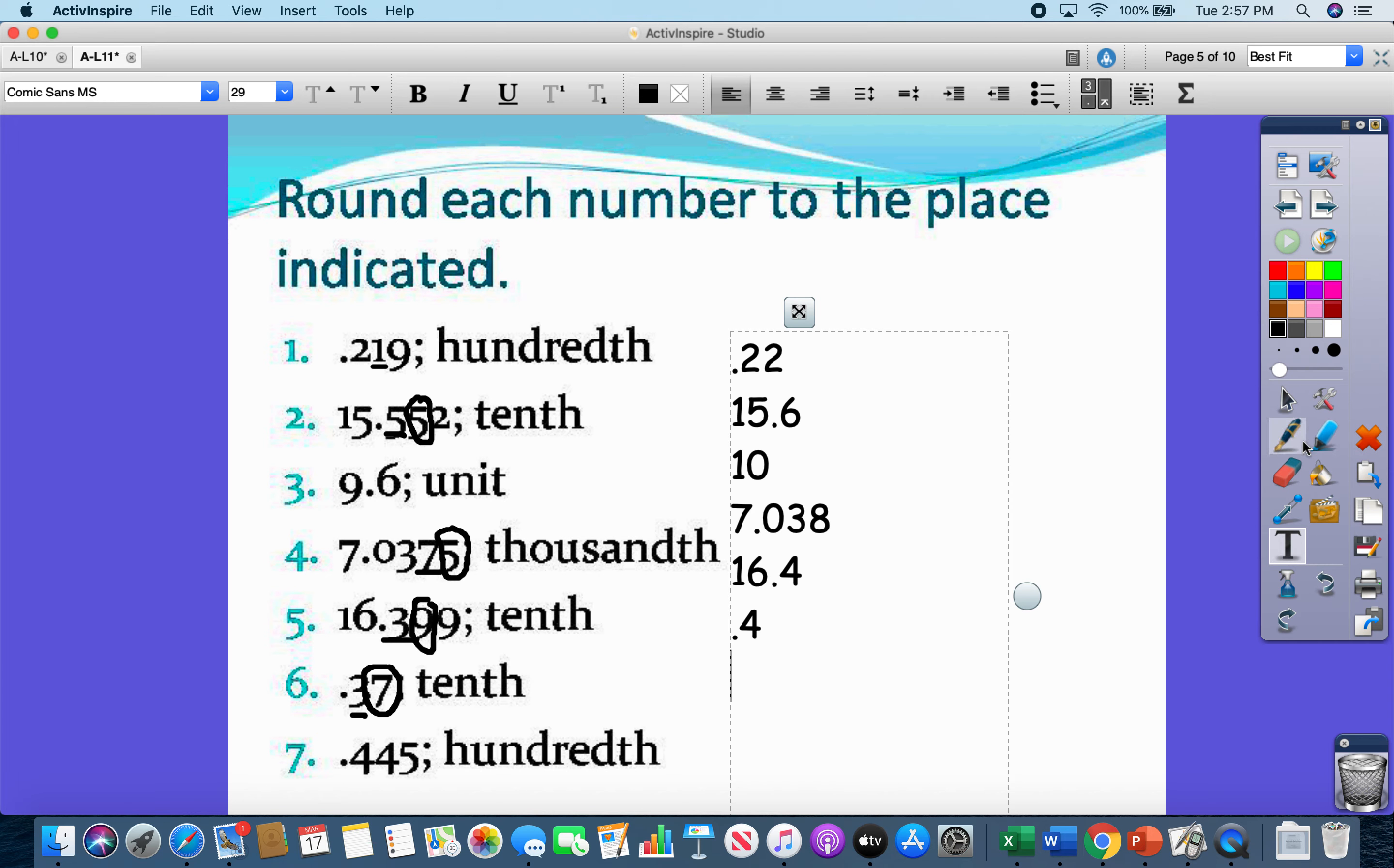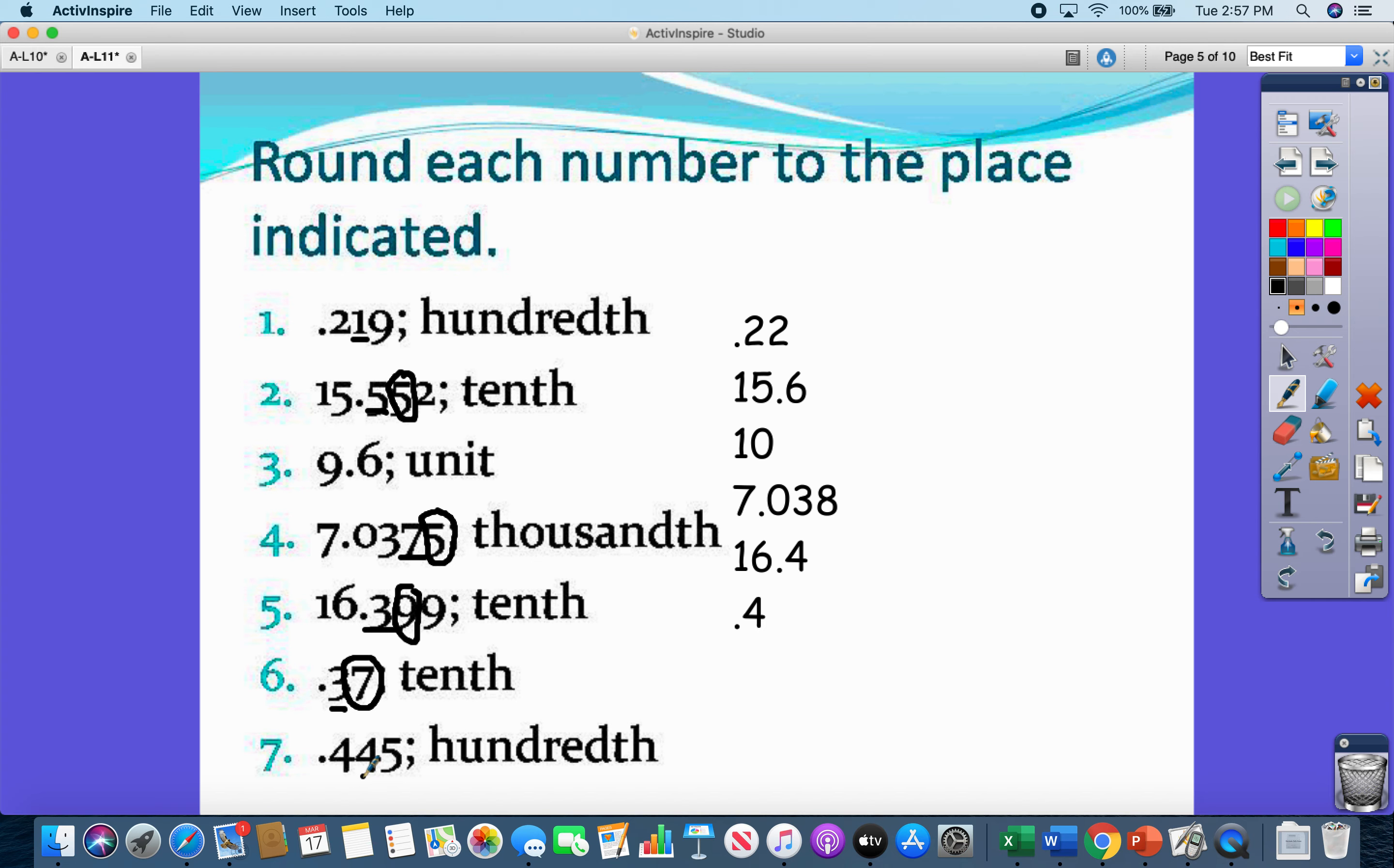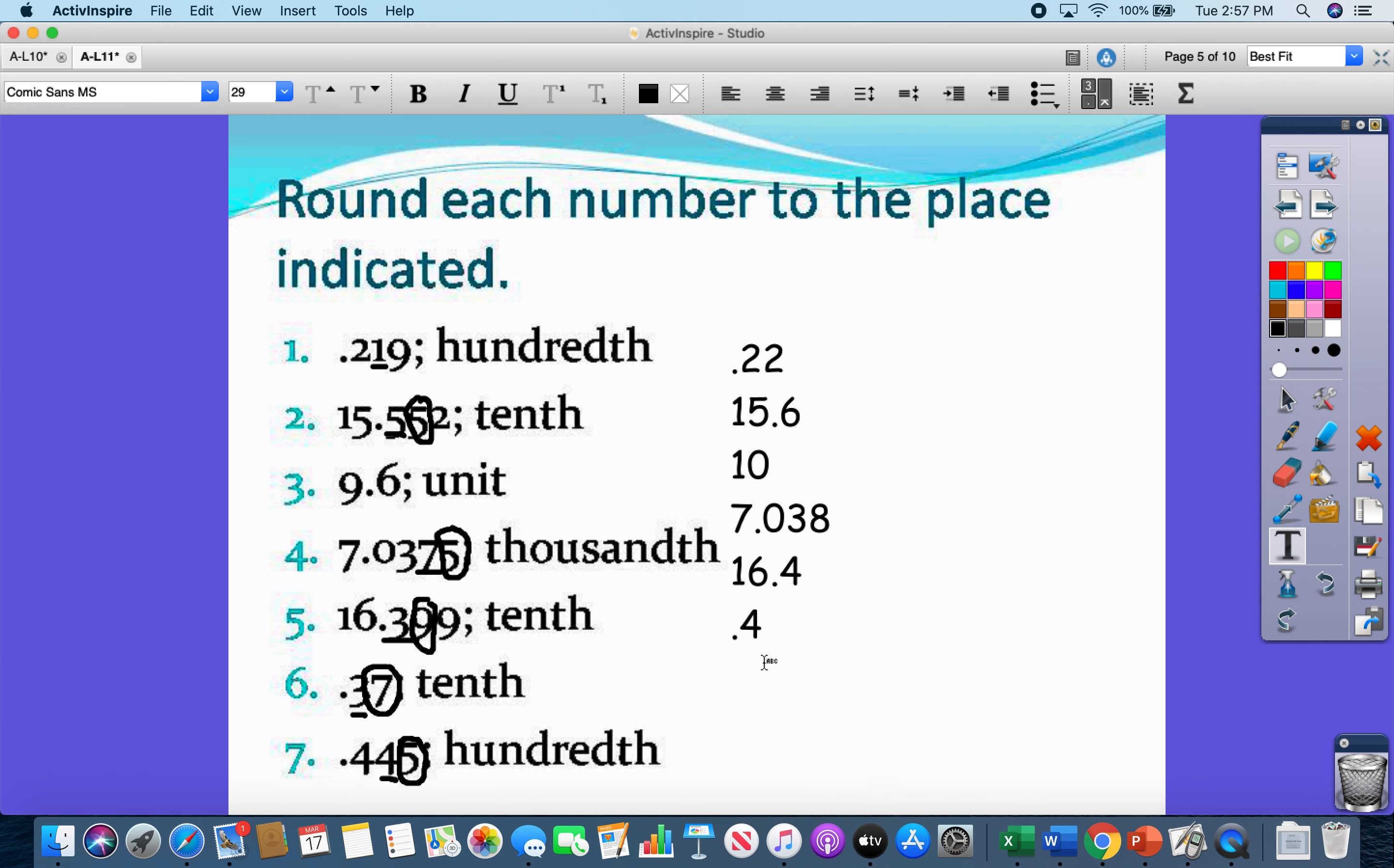And then, my last one, hundredths place. Where's my hundredths place? There it is, a 4. The digit to the right is a 5. I'm going to round up, which means it's going to be 0.45. There it is.